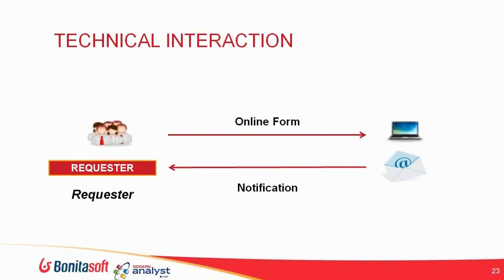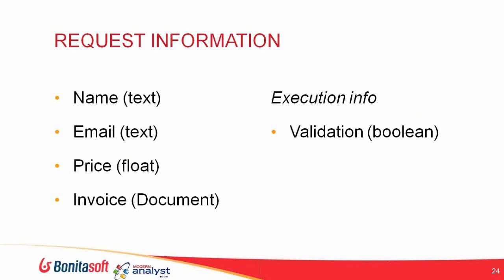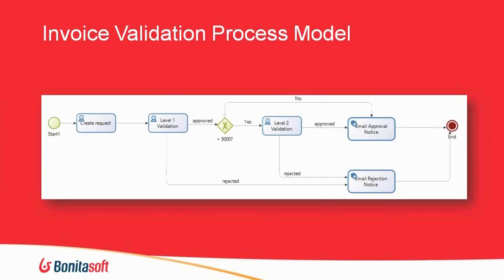Here's what the technical interaction will look like: the requestor fills out an online form and attaches the invoice. The execution engine runs it, sending it to level one validation if needed and level two if needed. Whether approved or not, it sends an email notification back to the requester — so once they've submitted, they won't have to worry about it. The data for this simple example includes the requester's name, email address, invoice amount, the invoice document itself, and some Boolean process variables to control the flow. Here's a preview of the BPMN 2.0 diagram we'll be building.